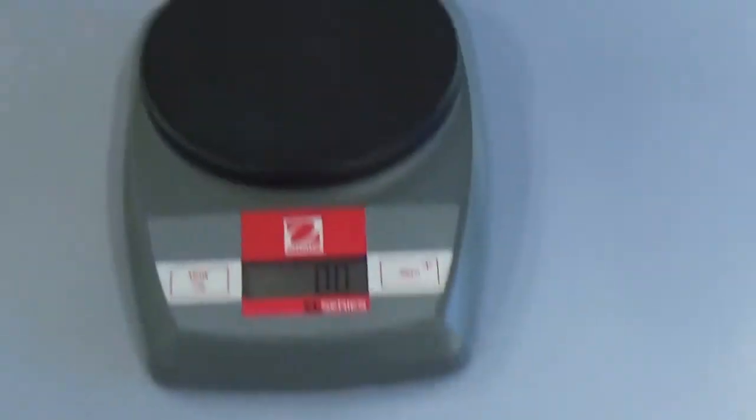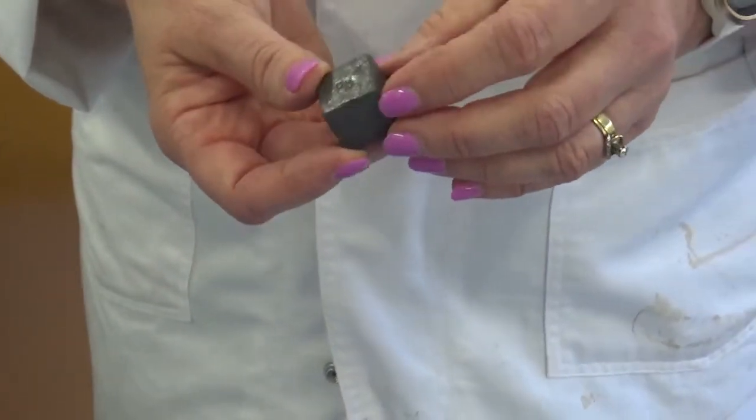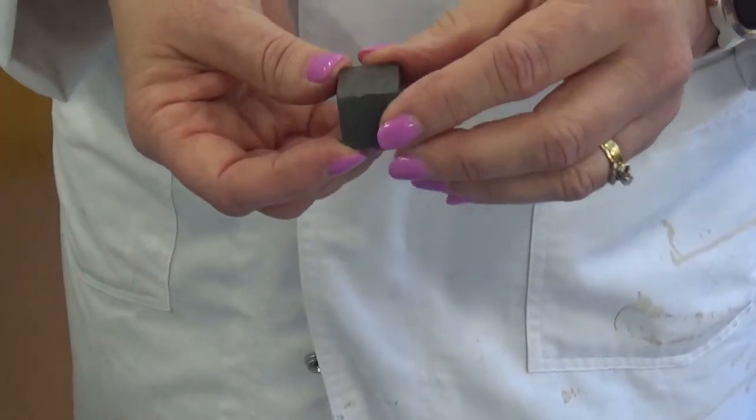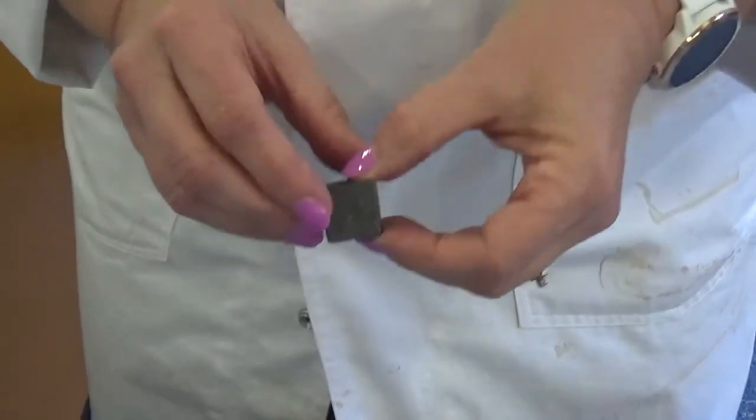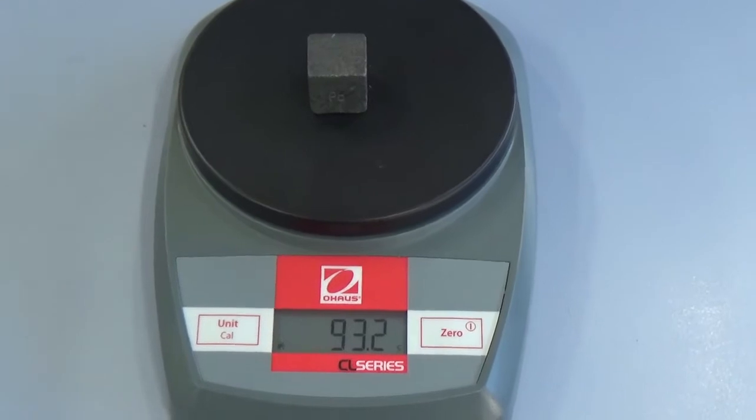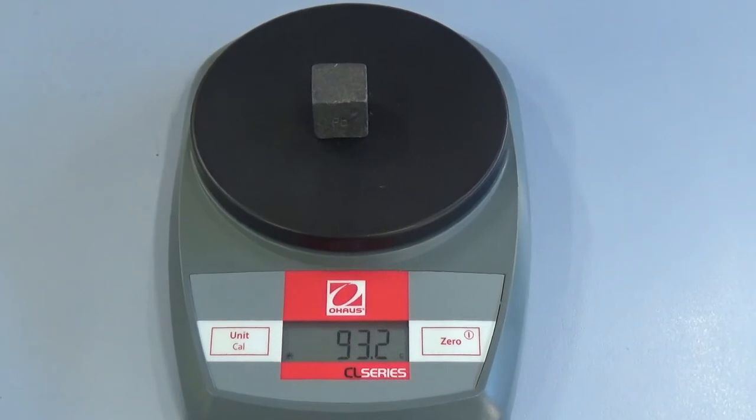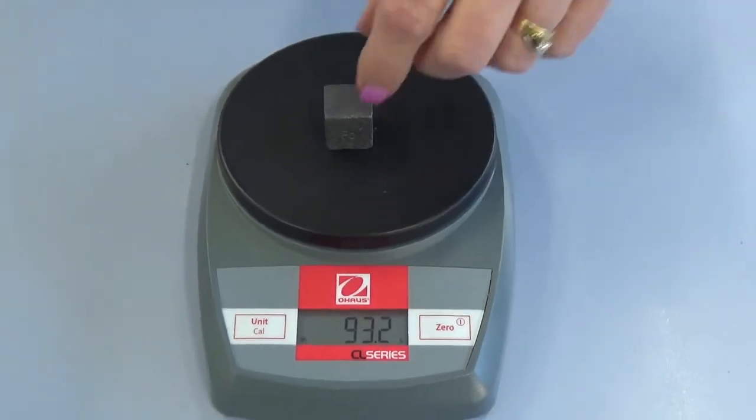OK, let's look at the opposite. Let's look at one that's heavy for its size. This is lead. They make fishing sinkers out of lead. Why? Because lead sinks well. OK, here we go. 93.2. My goodness, that's heavy. OK, write that one on your sheet.